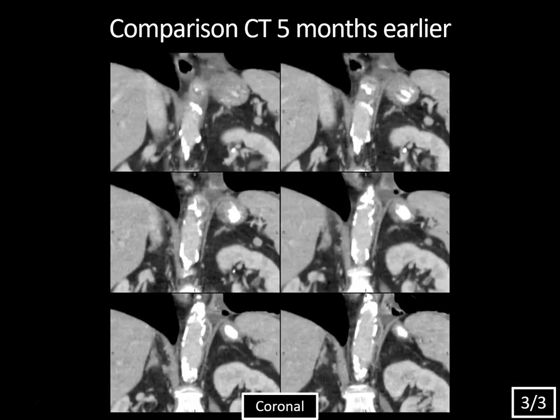Comparison studies are key — comparison imaging is your friend. You can see this pseudoaneurysm was just starting to form five months ago, ulcerating slightly beyond the lumen. That's helpful in determining the need for therapy. In this case, it had clearly expanded significantly from the prior study.